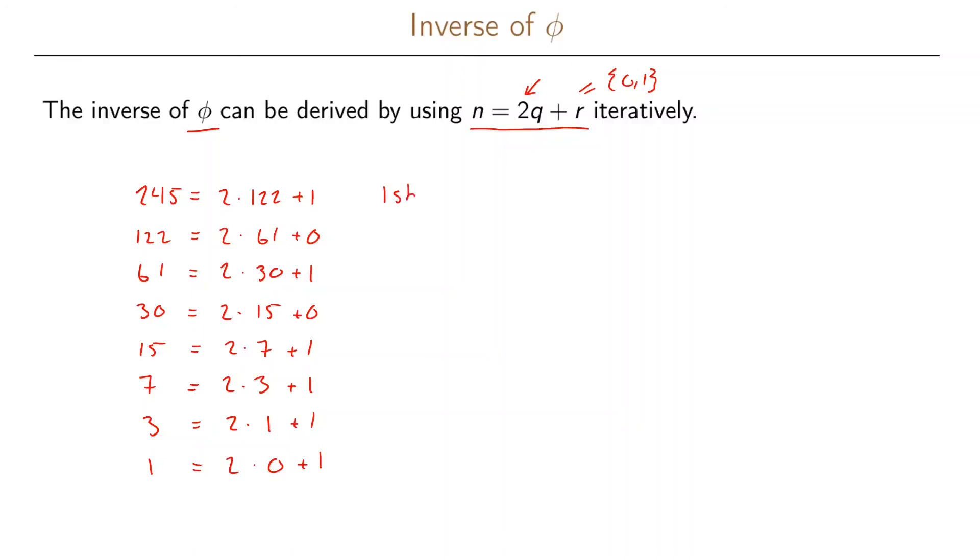So here we have our least significant bit which is 1 and our most significant bit here is also a 1. So 245 in the base 10 can be written as 11110101. So we go from the bottom here starting with the MSB to the top with the LSB. So this is our 245 in base 2 which we can if we want also clarify by using a 2 here.